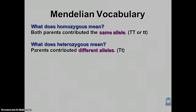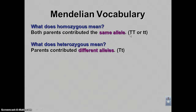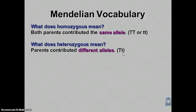Heterozygous is the opposite — hetero means different, so you get different alleles. One parent gave the tall allele and the other gave the short allele. These are adjectives used to describe an individual. A plant with big T, big T is homozygous tall. An individual with big T, little t is heterozygous, meaning one parent gave the dominant allele and the other gave the short allele.